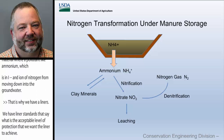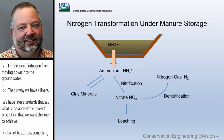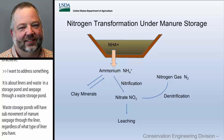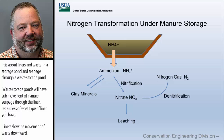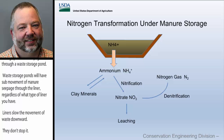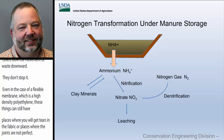I want to address something about liners and seepage through a waste storage pond. There will be sub-surface movement of manure seepage through the liner pretty much regardless of what type of liner you have. Liners slow the movement of waste downward — they don't stop it. Even in the case of a flexible membrane such as high-density polyethylene, there can be tears in the fabric or imperfect joints, and you can still have some seepage through those liners. The amount of seepage depends on the type of liner.